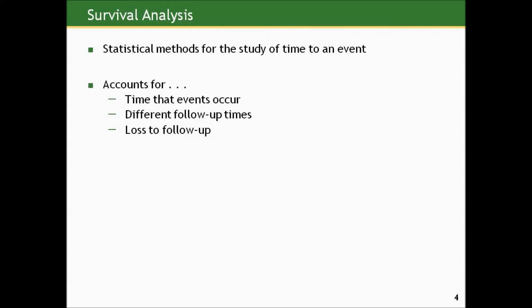Survival analysis, sometimes called analysis of failure time data, is a broad class of statistical methods for the study of time to an event. It's called survival analysis, which implies that the event of interest is death and that we're interested in studying time to death or survival. But truthfully, this event can be any well-defined outcome — time to remission from a disease, time to imprisonment after being released, time to graduating from high school, et cetera. The survival analysis techniques account for the times that events occur, for different follow-up times in a study, and for something called loss-to-follow-up.